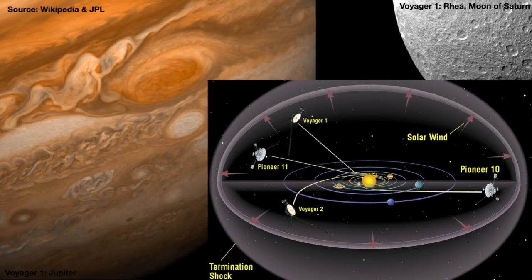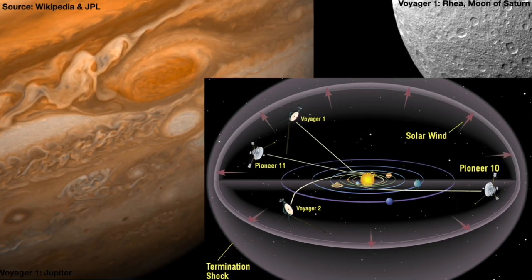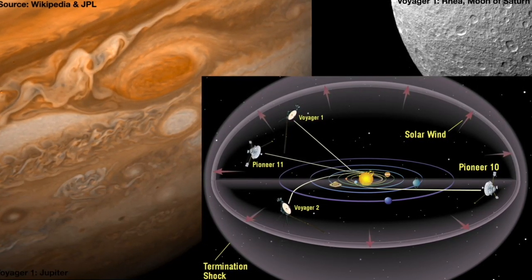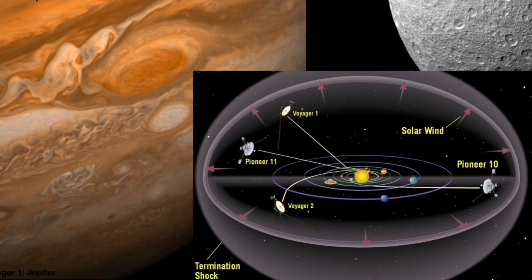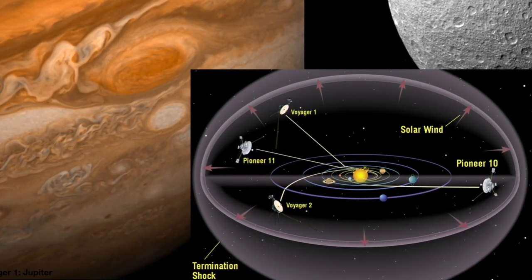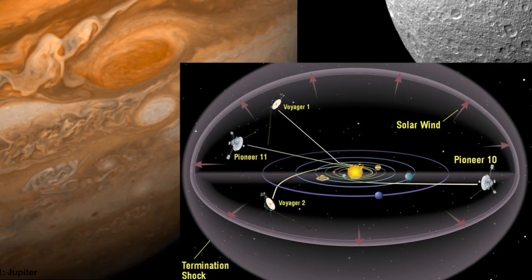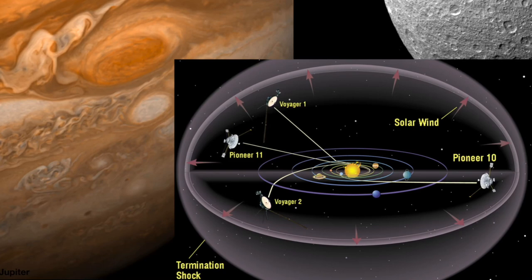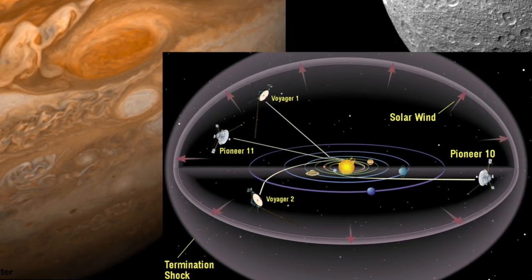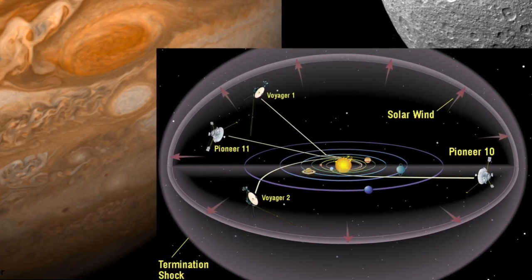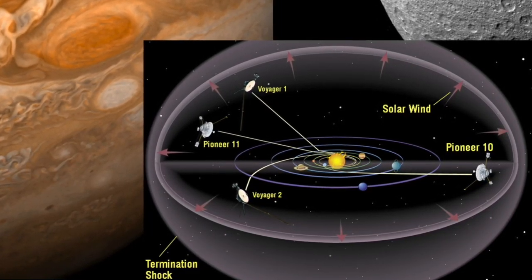Indeed, humans have managed not only to get spacecraft to break Earth's escape velocity, we have also managed to make spacecraft which travel faster than the escape velocity of the Sun. These spacecraft — Voyager 1 and 2, Pioneer 10 and 11, and the New Horizons spacecraft, which is not shown in this picture — are headed out of the solar system and into interstellar space.